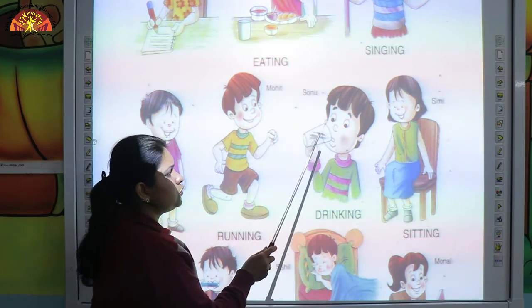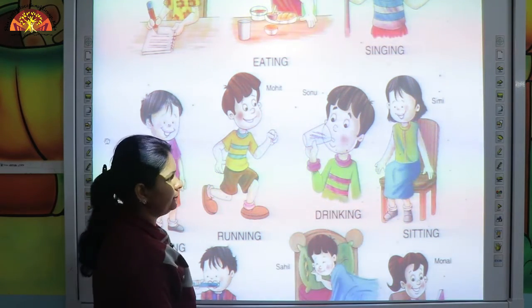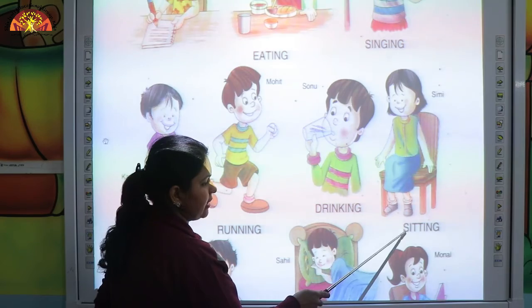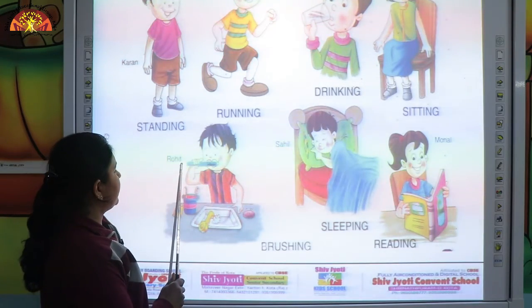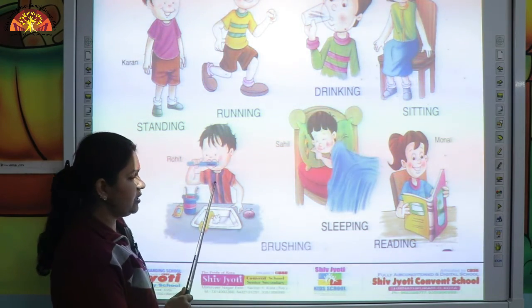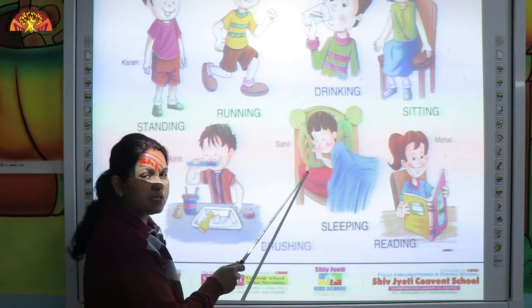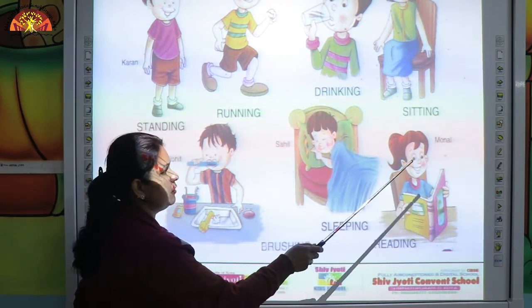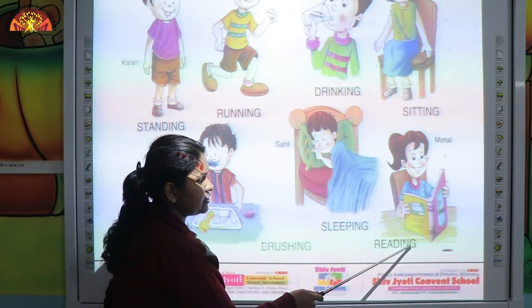Sonu is drinking — D-R-I-N-K-I-N-G, drinking. Simi is sitting — S-I-T-T-I-N-G, sitting. Rohit is brushing — B-R-U-S-H-I-N-G, brushing. Sahil is sleeping — S-L-E-E-P-I-N-G, sleeping. Monal is reading — R-E-A-D-I-N-G, reading.